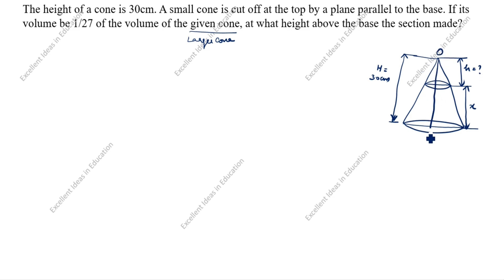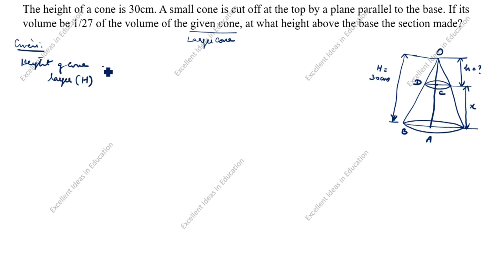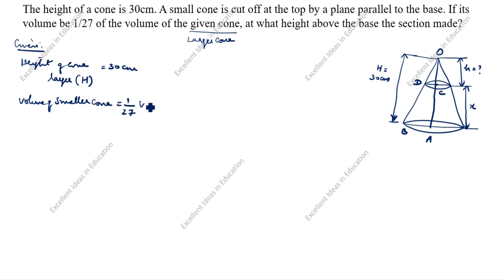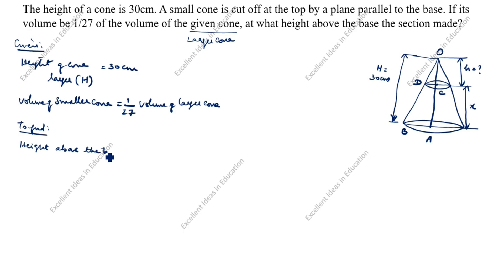We will write the labels: O, A, B, C, D. The height of the larger cone, big H, is equal to 30 centimeters. Given that the volume of the smaller cone equals 1/27 of the volume of the larger cone. We need to find the height above the base, which we will take as x.